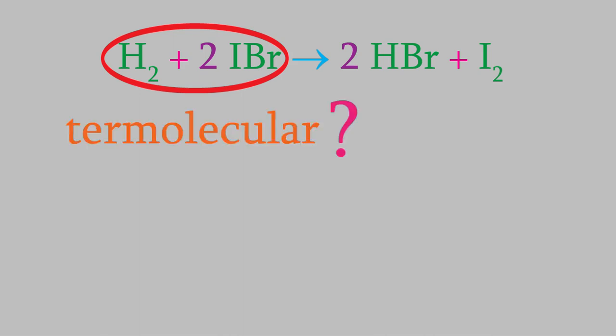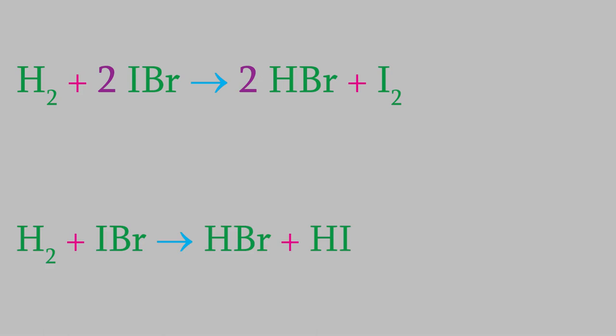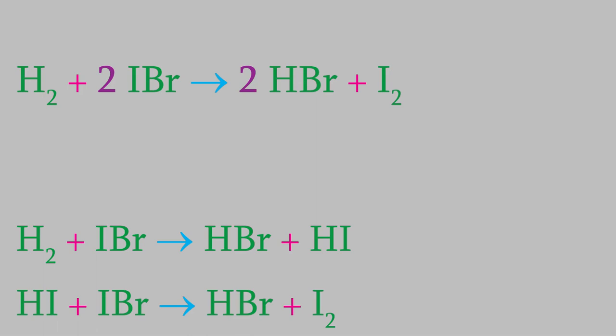But the way we wrote this reaction, it looks like three molecules must collide to cause the reaction - two iodine bromide molecules and a hydrogen molecule. As we just saw, a collision between all three molecules is very unlikely. So how does this reaction happen? As it turns out, this reaction is not termolecular, and the three reactant molecules you see here don't collide all at once. Instead, the reaction happens in two steps. First, a molecule of hydrogen reacts with one of the iodine bromides to produce hydrogen bromide and hydrogen iodide. Next, the hydrogen iodide we just produced combines with a second iodine bromide molecule to form another hydrogen bromide and an iodine molecule.